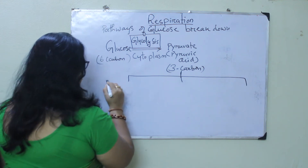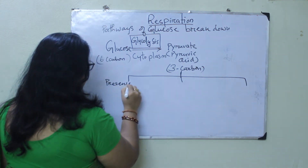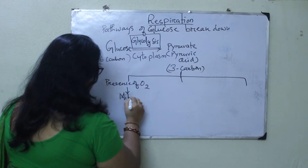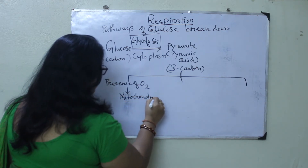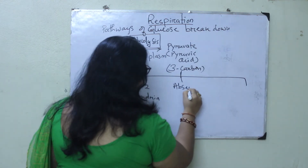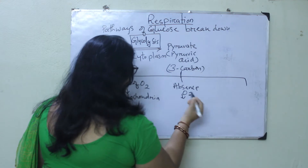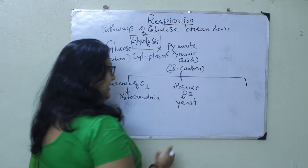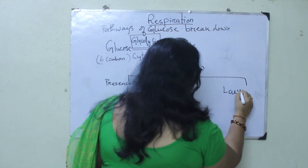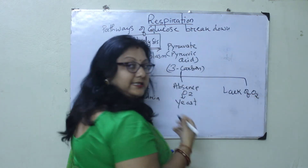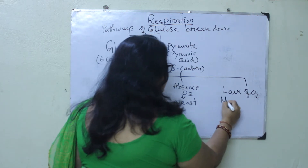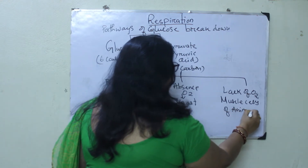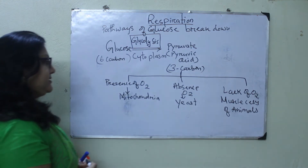The first pathway occurs in the presence of O₂, and its location is the mitochondria. In the absence of O₂, the location is cells or organisms like yeast and some anaerobic bacteria. The third pathway, also a lack of O₂, takes place in the muscle cells of animals.